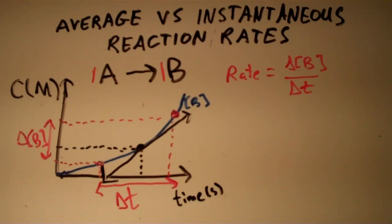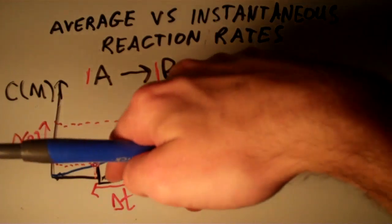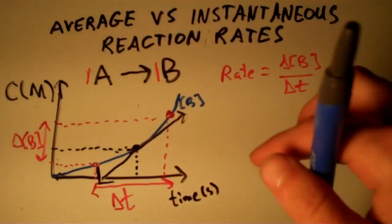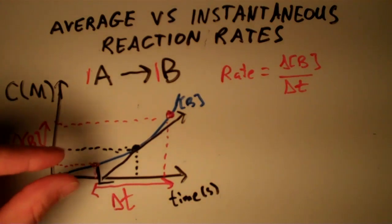For you calculus fans, the way to solve this is what we do is we say that since this is an instant, we're going to let our time interval delta T get smaller and smaller.